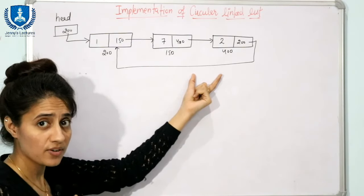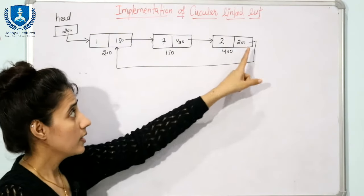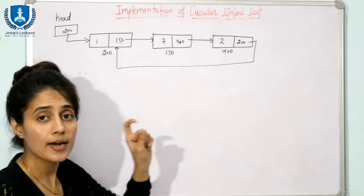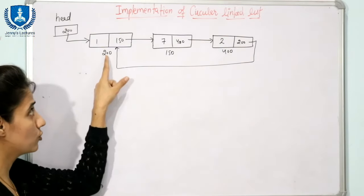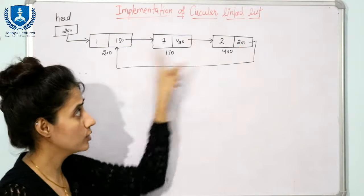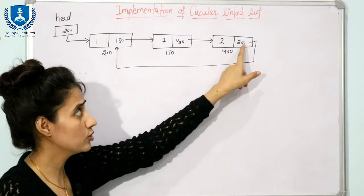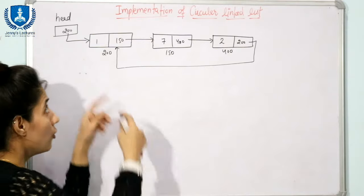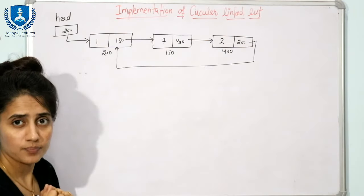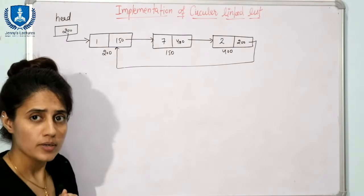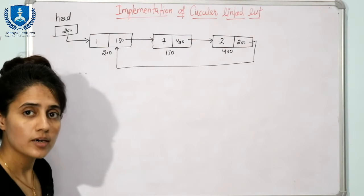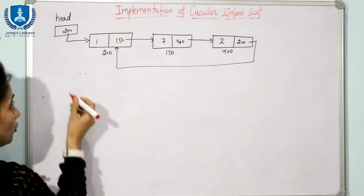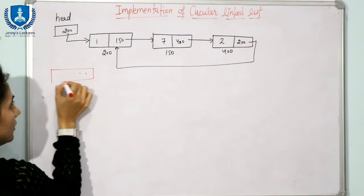A circular linked list is the same as a singly linked list, but the difference is that the last node contains the address of the first node. In a singly linked list, we store null here, but in circular linked list we store the address of the first node. We have maintained only a head pointer, so now the problem is if I want to insert a node at the beginning.